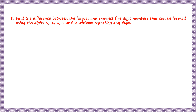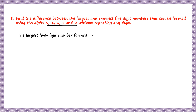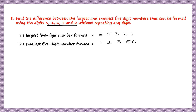Question 8. Find the difference between the largest and the smallest 5-digit numbers that can be formed using the given digits without repeating any digit. The largest 5-digit number formed using these digits, starting with the largest digit, is 65,321. The smallest will be in reverse order: 12,356.